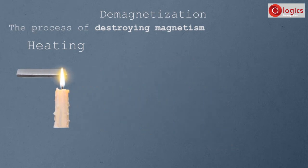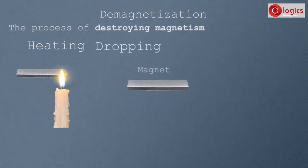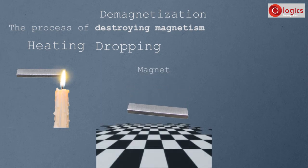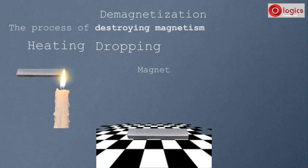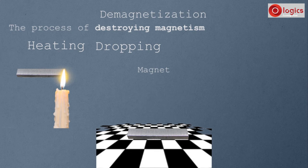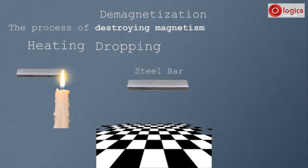Second process of demagnetization is dropping. This is a magnet. Drop this magnet on the floor for many times. Due to dropping, the magnet loses its magnetism and becomes a steel bar.